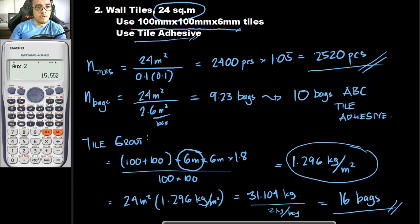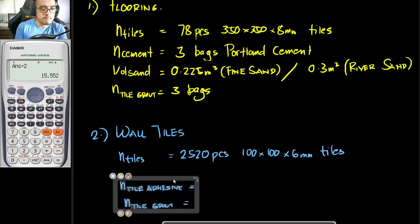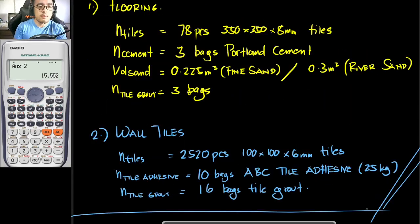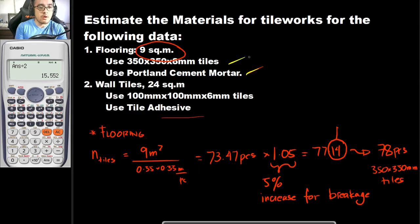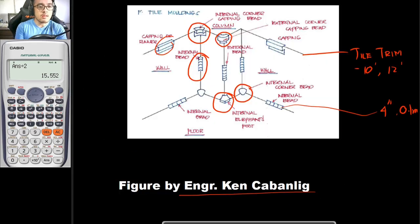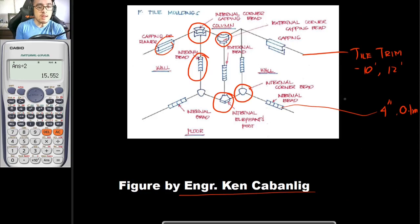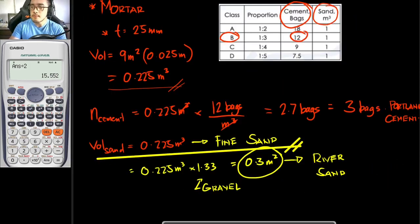For our wall tiles summary — number 2: 2,520 pieces of 100 by 100 mm tiles, 10 bags of ABC tile adhesive, and 16 bags of tile grout. If you would be needing the miscellaneous items, you can estimate them by direct count. That's it for this pre-recorded lecture. Thank you.